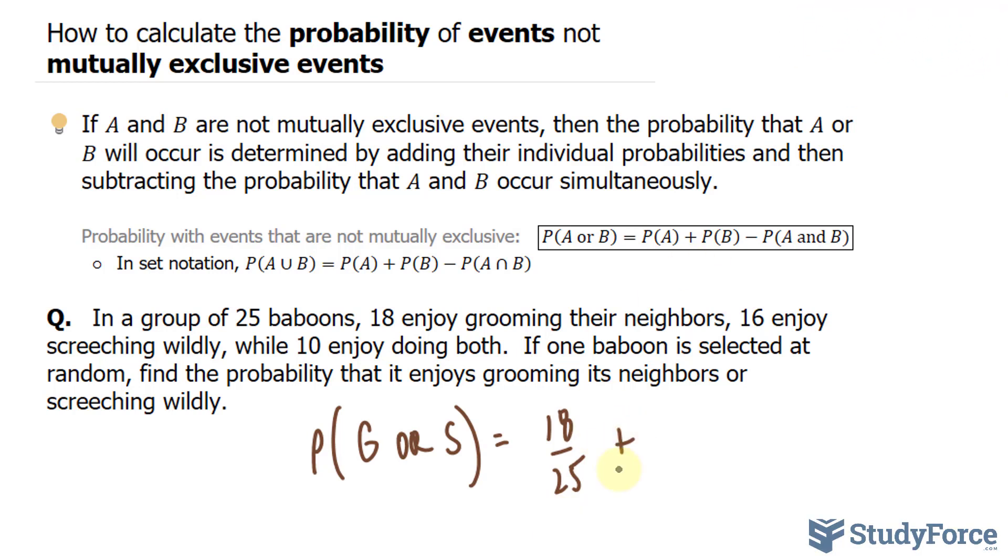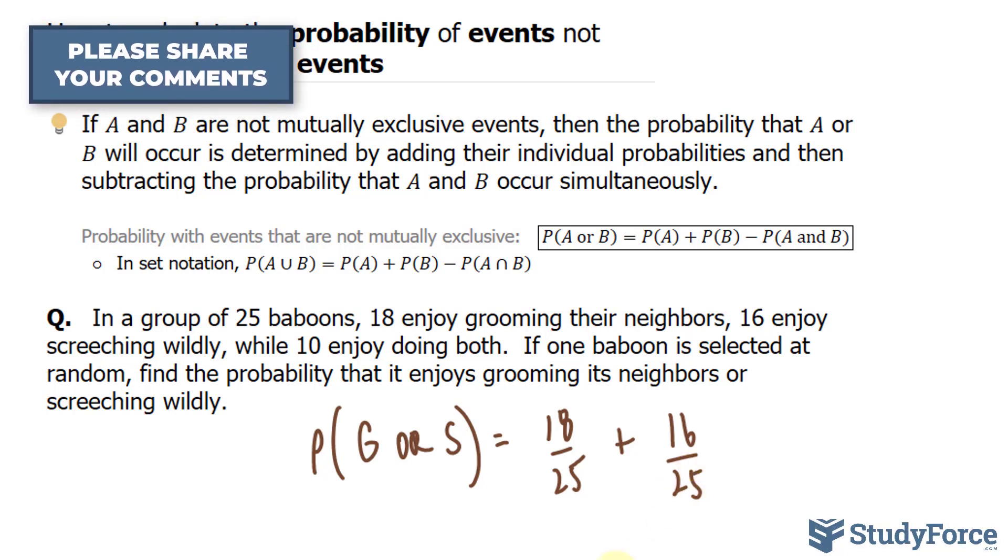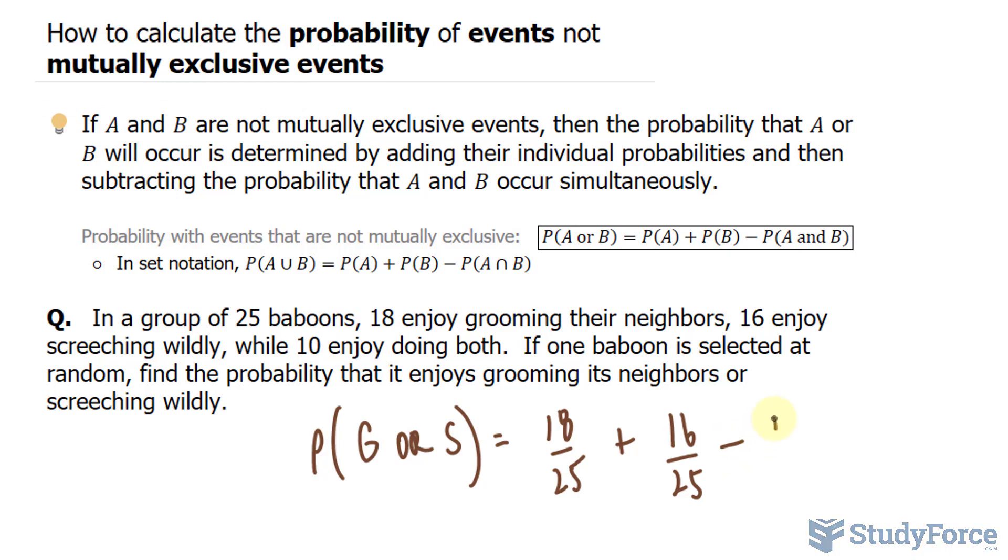The probability of baboons screeching wildly is 16 over 25. And the probability that they enjoy doing both is 10, minus 10 over 25.